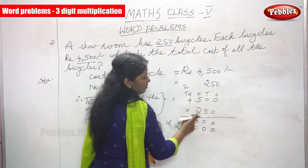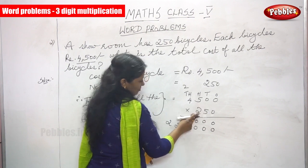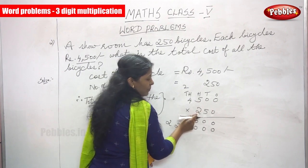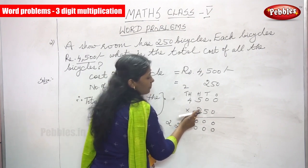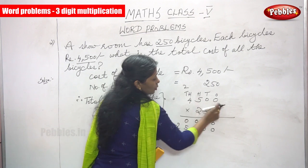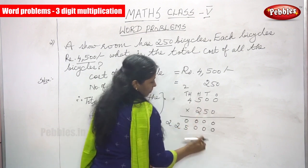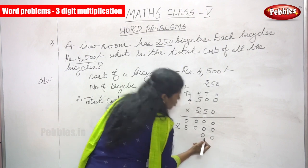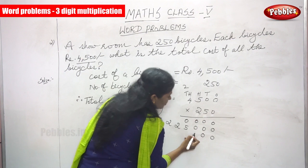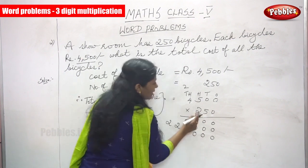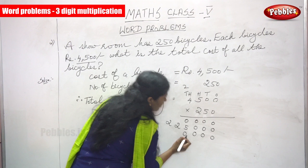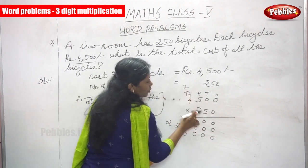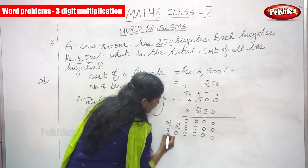Now I am going to multiply by the hundreds place value, which is 2. Before that, put a 0 in the ones place and a 0 in the tens place. Then: 2 into 0 is 0, 2 into 0 is 0, 2 fives are 10 — write 0, carry over 1. Then 2 fours are 8, plus 1 carry over is 9.